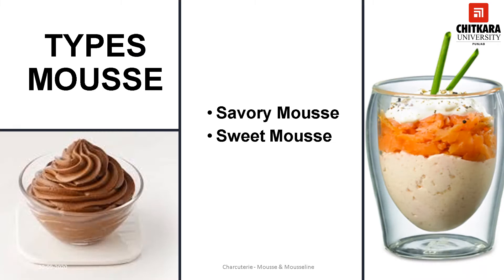Mousse can be of two kinds: savory as well as sweet. Savory Mousse is served as an hors d'oeuvre or entrée, and may be based on fish, shellfish, poultry, ham, or a vegetable. Whereas sweet Mousse are usually based on fruit or a flavoring such as chocolate or coffee. They are often set in a mold, usually served cold, and may be stabilized by using gelatin.